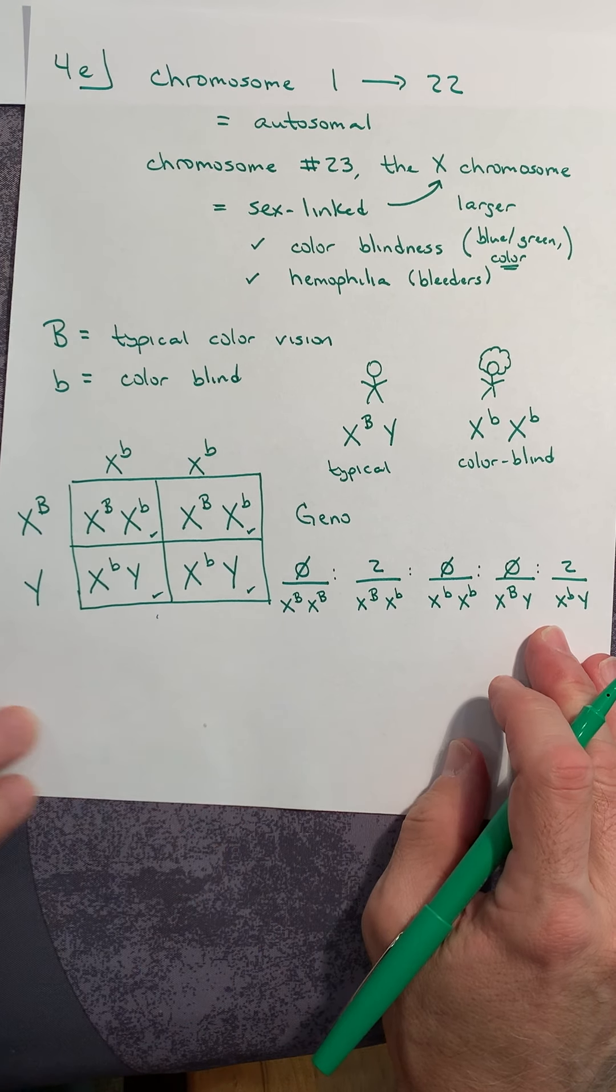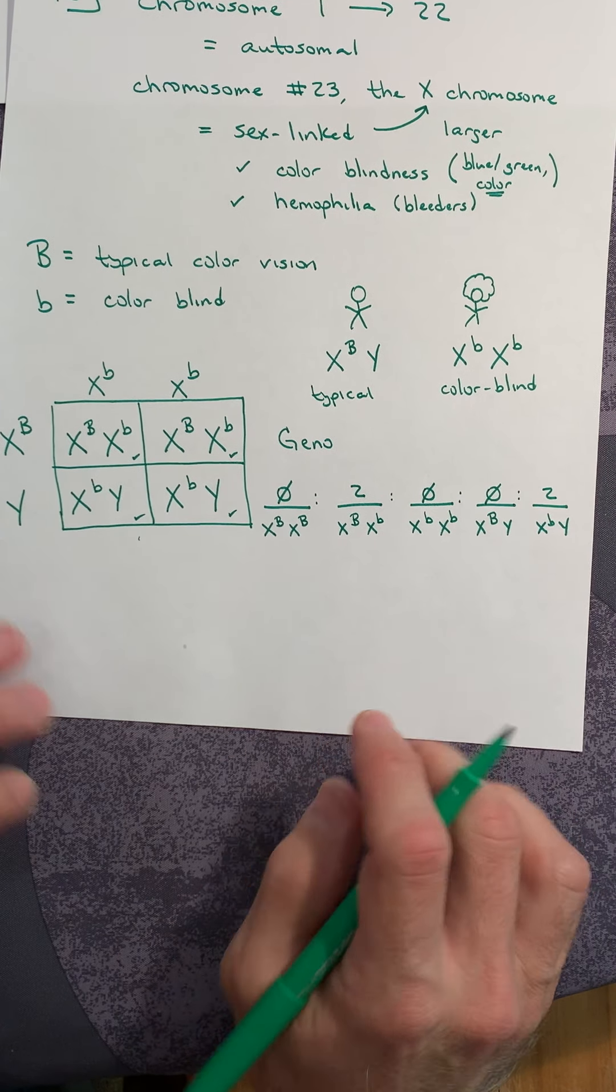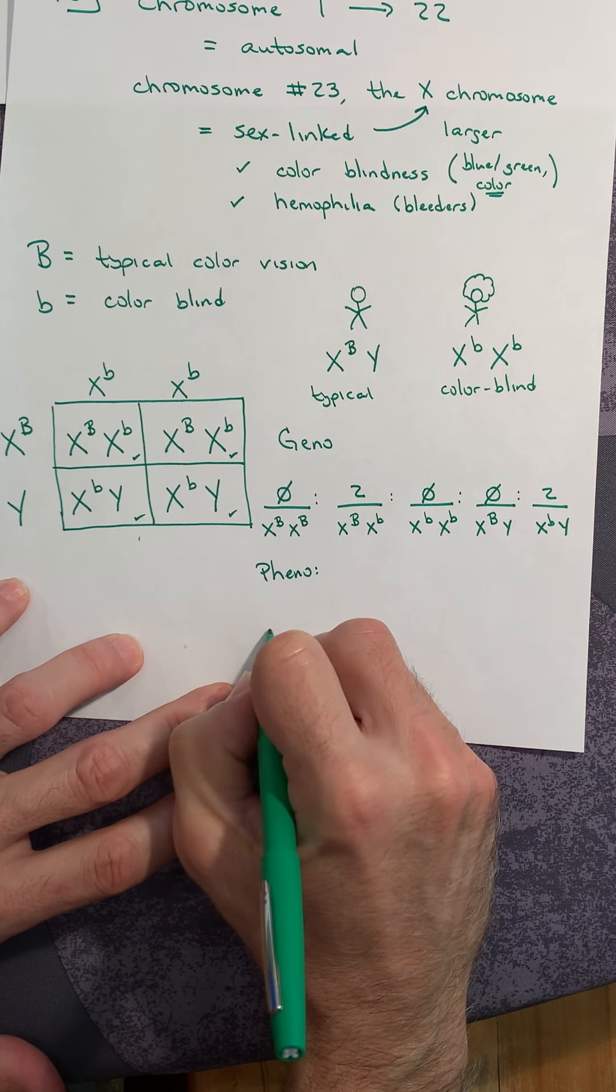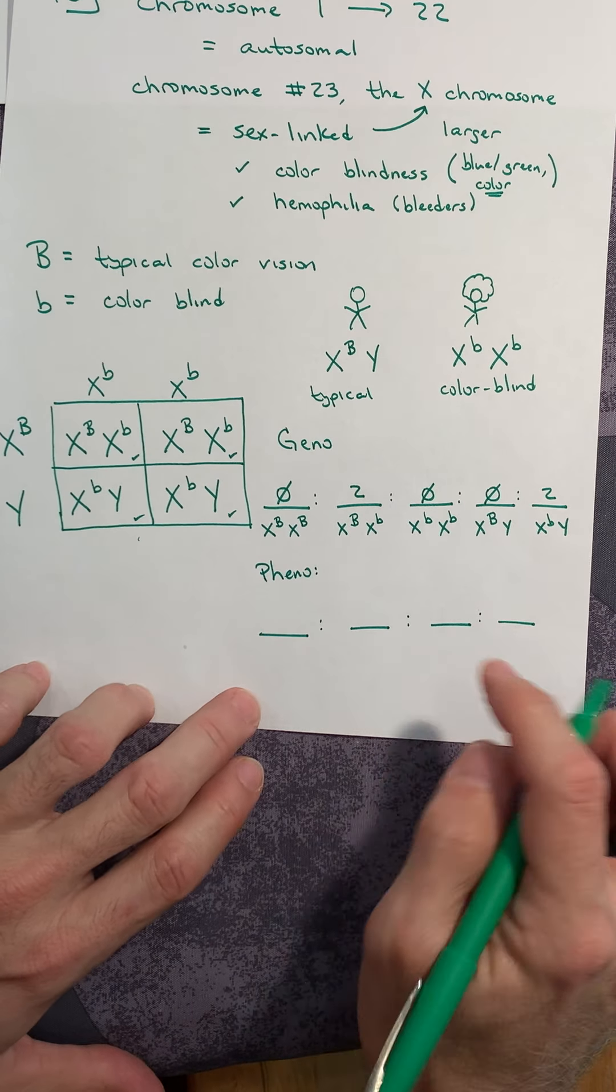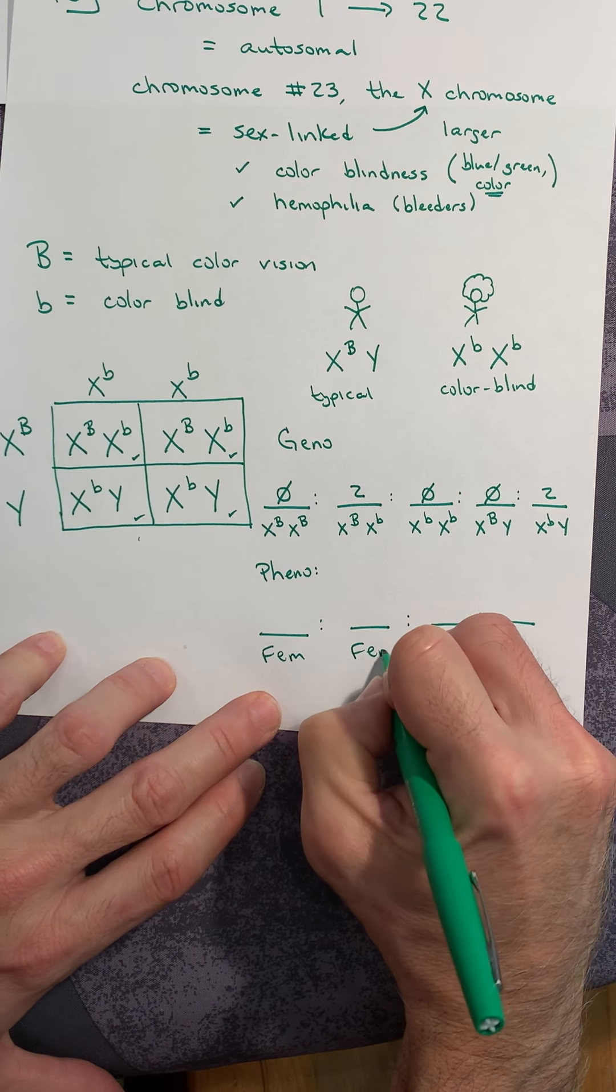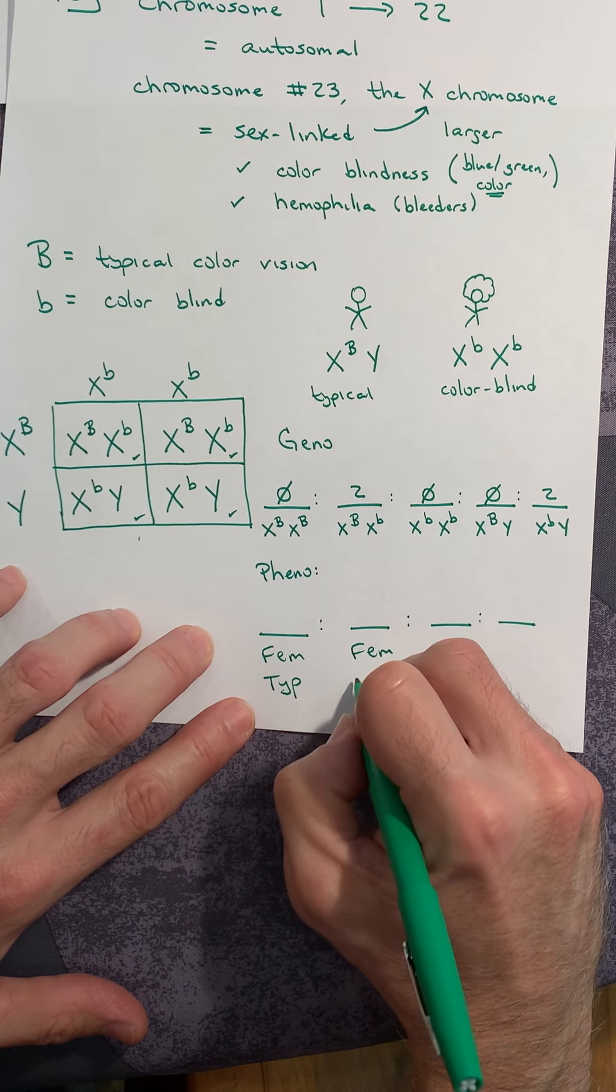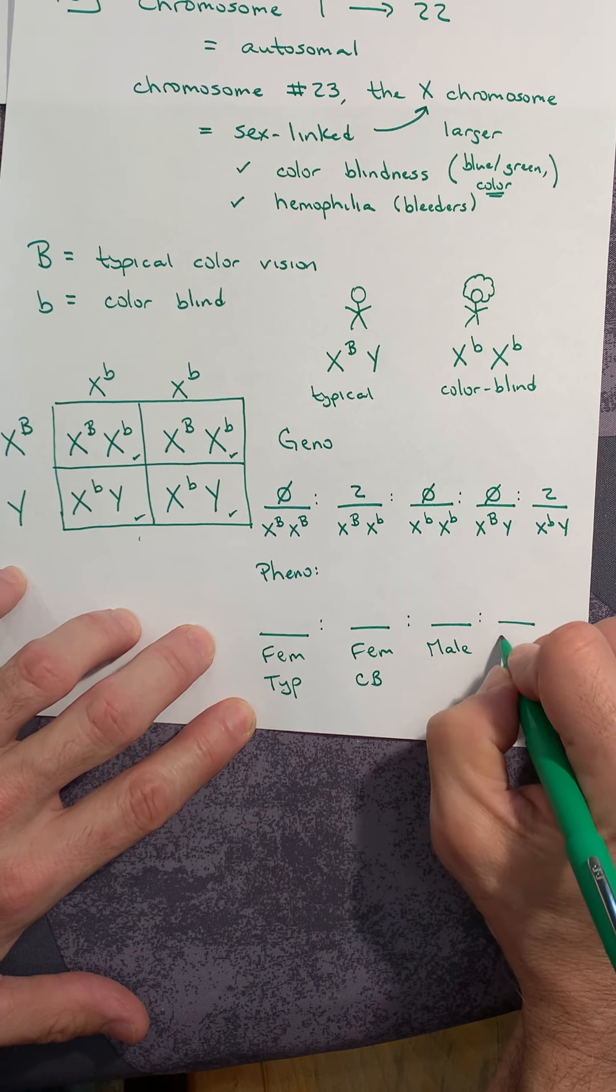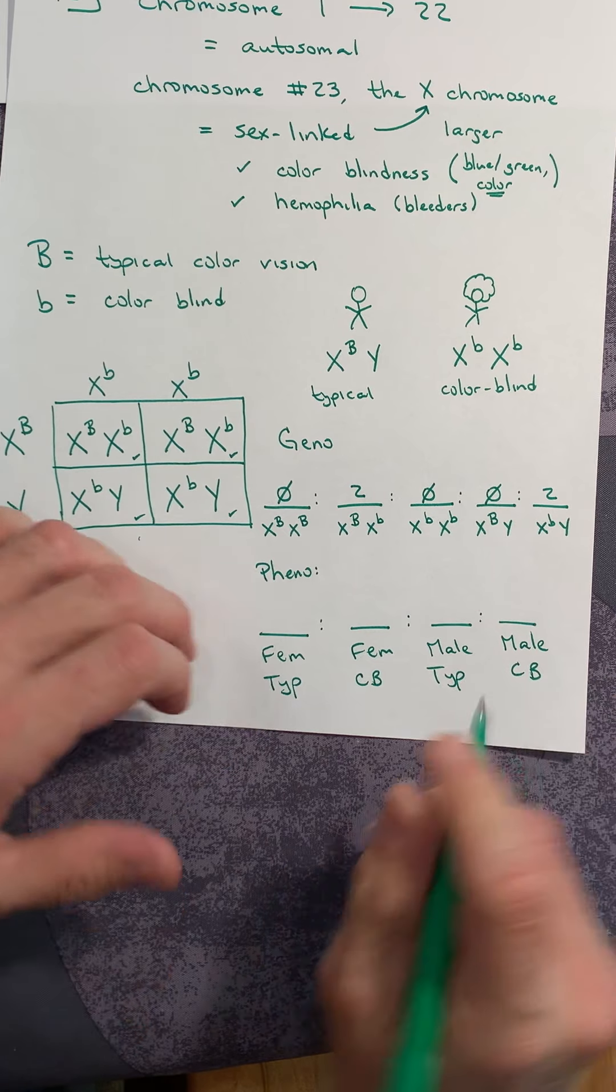Five genotypes when it comes to being sex-linked: three for the female and two for the male. When you come to the phenotype, there are four choices—1, 2, 3, and 4. The female is either typical or colorblind. Same thing for the male: the male is either typical or colorblind.